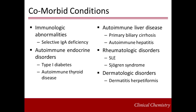Celiac disease is associated with a variety of comorbid conditions. Patients may have evidence of immunologic abnormalities, specifically a selective IgA deficiency. This type of IgA deficiency occurs significantly more frequently in patients with Celiac disease compared to the general population, although the prevalence is still only on the order of 3 to 4 percent. IgA deficiency is important to recognize because many specific antibody tests used to diagnose Celiac disease detect antibodies of the IgA isotype.